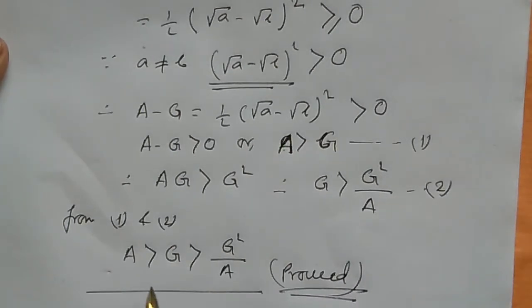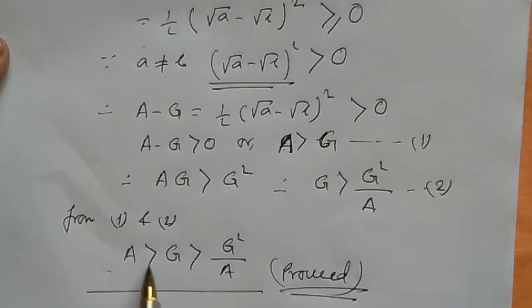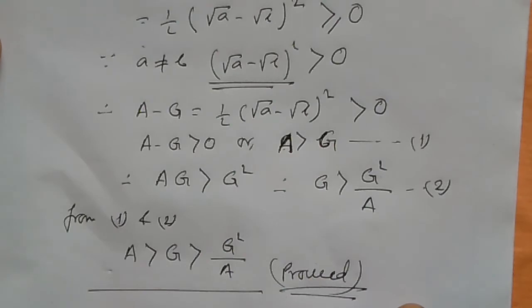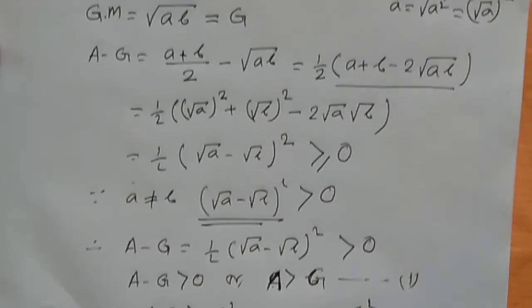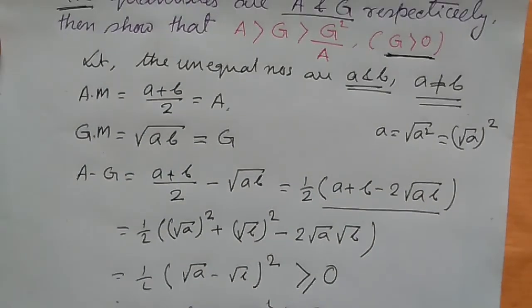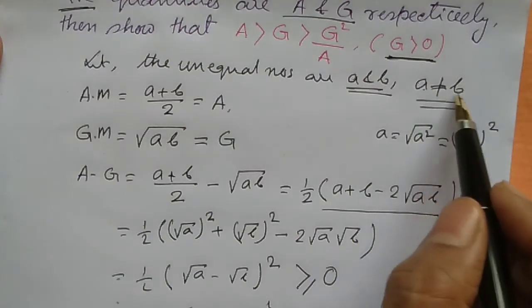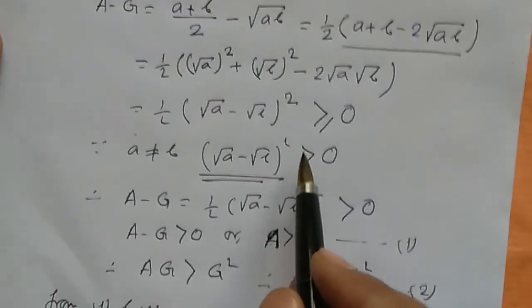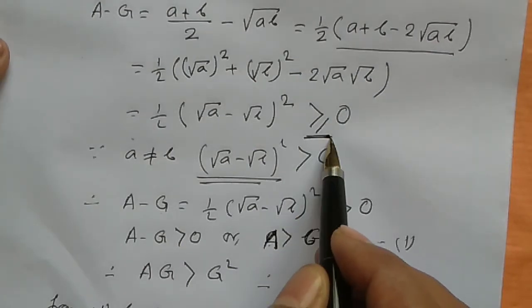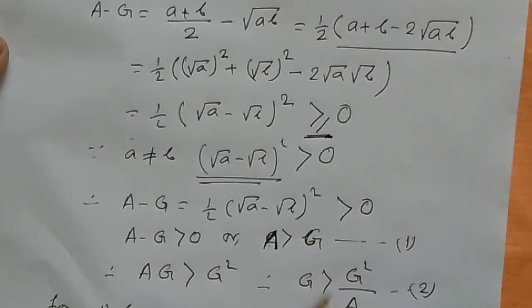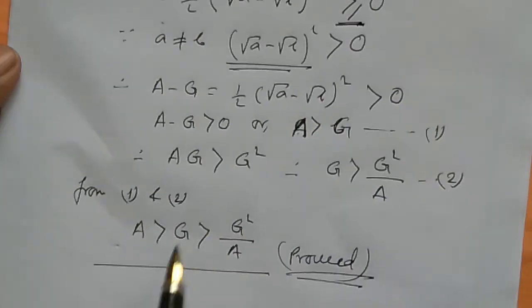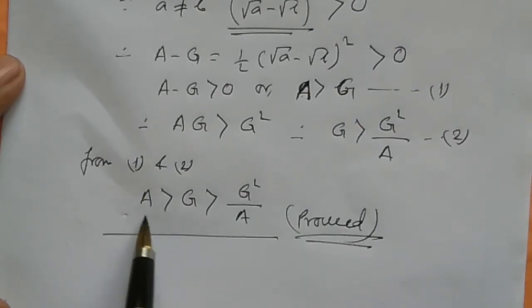This proves that the arithmetic mean is strictly greater than the geometric mean. Note that since the two terms a and b are unequal, we use strict inequality — A is strictly greater than G.